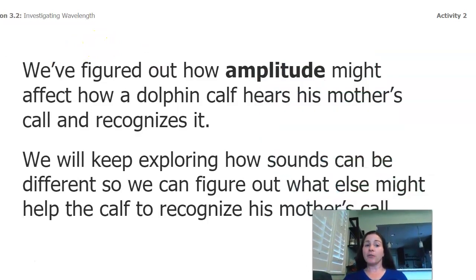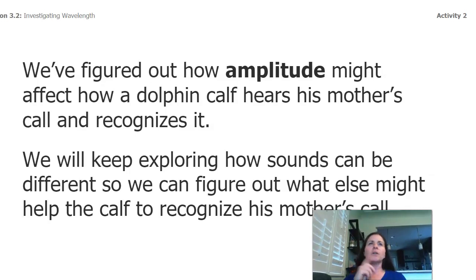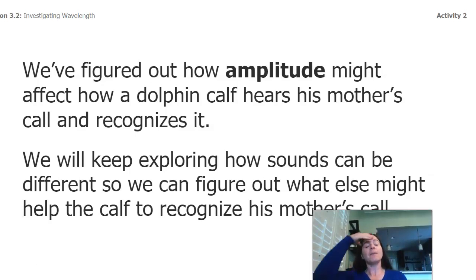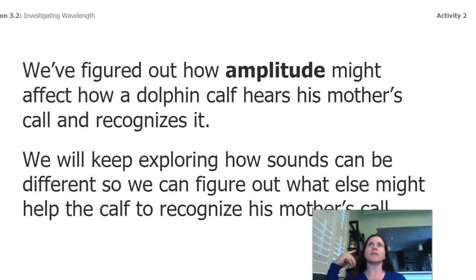We've figured out how amplitude might affect how a dolphin calf hears his mother's call. Now we're going to keep exploring how sounds can be different to figure out what else might help the calf recognize his mother's call. Because amplitude is one piece of it, but does volume explain everything? Like if I'm in a mall and I yell "mom," how does my mom know it's me? It's not about being louder or quieter — she still knows it's me. So I'm wondering what other things there might be.